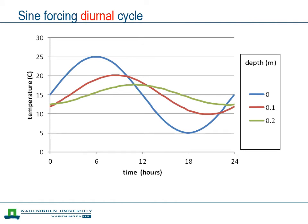Let's see what this concept of damping means in reality. This is an idealized picture, but it illustrates what is happening. Focusing on the diurnal cycle — 24 hours — the blue line shows the boundary condition at the top, the temperature varying between 25 degrees at noon and 5 degrees at night. At 10 centimeters depth, the amplitude of temperature variation is considerably reduced, and the maximum temperature has shifted in time — a phase shift. Going even deeper to about 20 centimeters, the amplitude reduces further and the phase shift is larger.